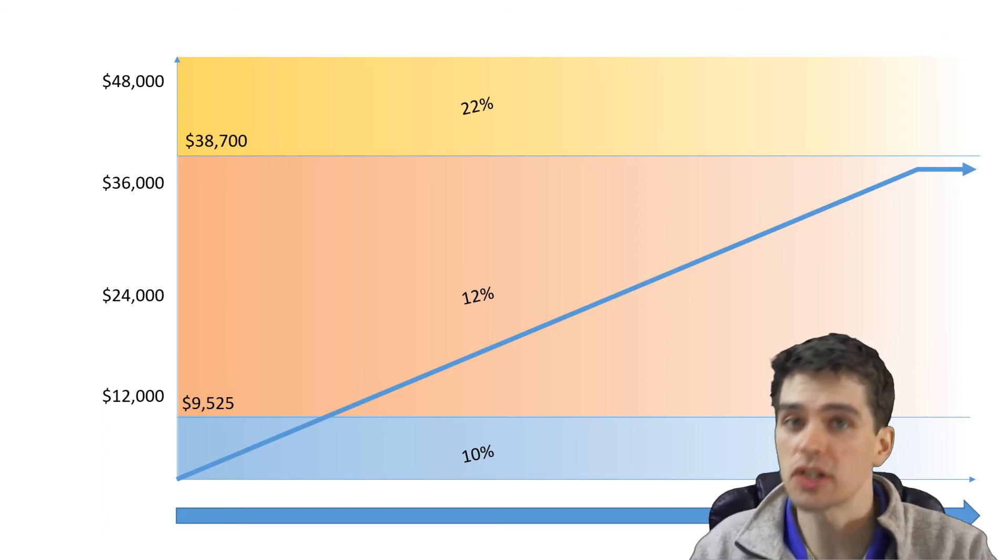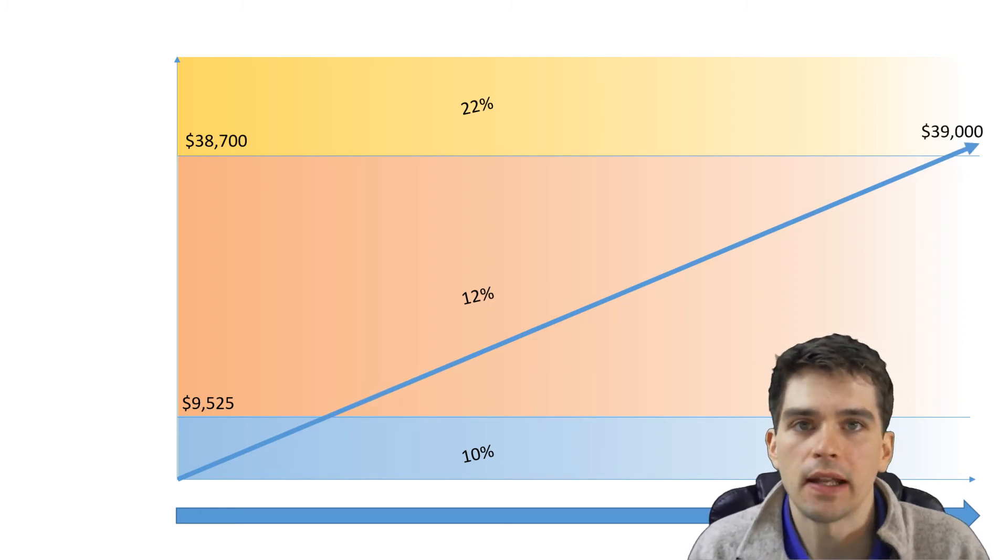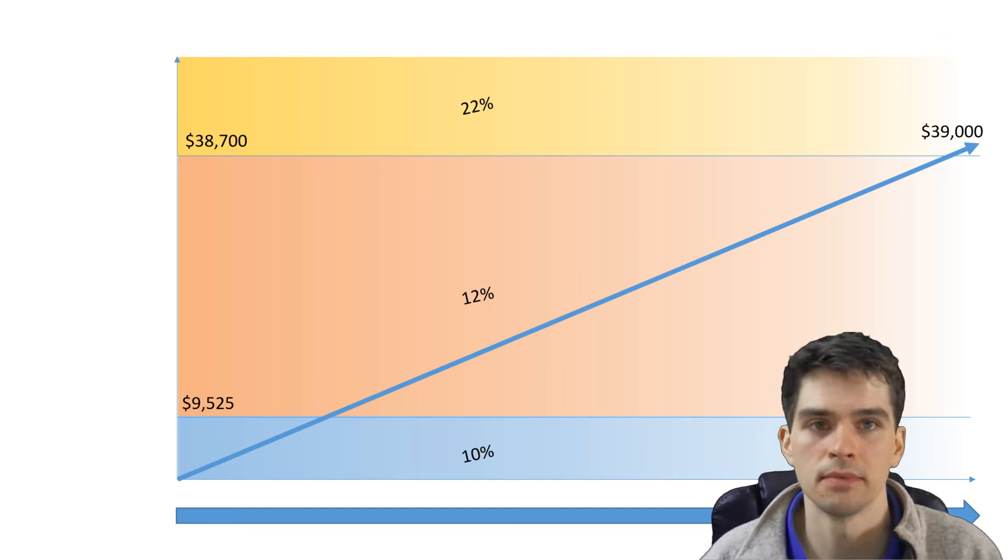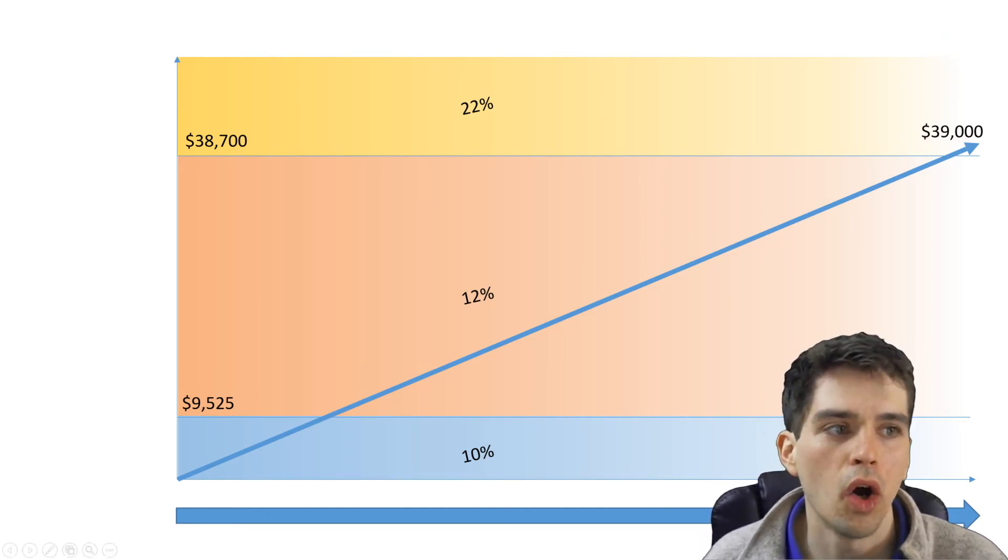Interestingly enough, this is all a myth because it forgets to take into account the fact that in the United States our income tax brackets are marginal. Here's what that means. If you earn $39,000 in a year, only the money you make above the tax bracket threshold is taxed at that rate.